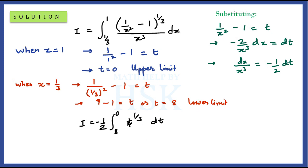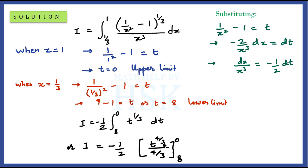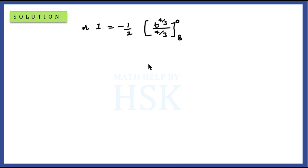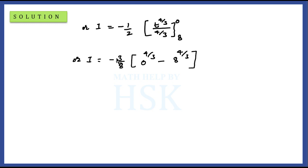Now we can easily integrate t to the power of 1 by 3. This gives t to the power of 4 by 3 upon 4 by 3, multiplied by minus 1 by 2, evaluated for the limits 8 to 0. Simplifying the factor: minus 1 by 2 times 3 by 4 gives minus 3 by 8. We then apply the upper limit 0 to the power of 4 by 3 and subtract the lower limit 8 to the power of 4 by 3.